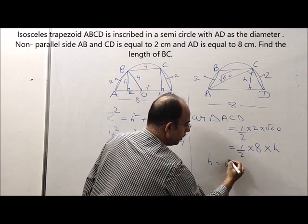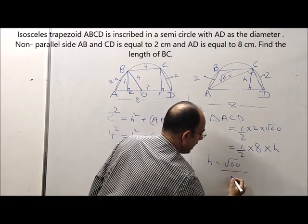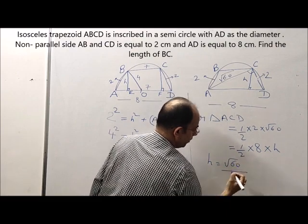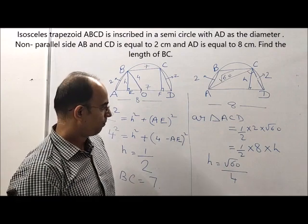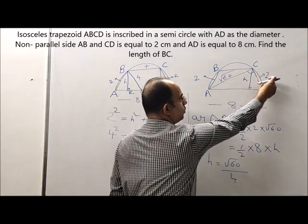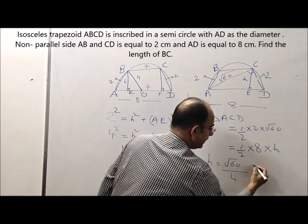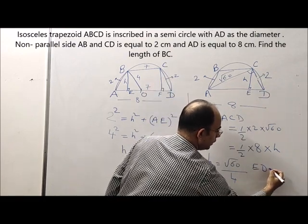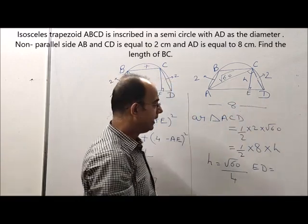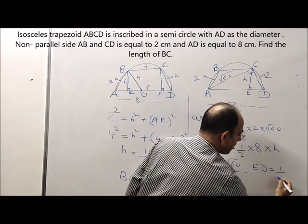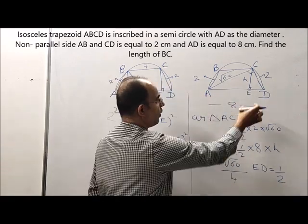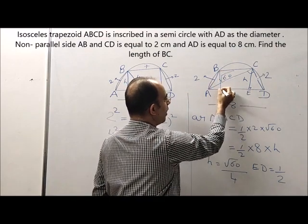Solving these two, we get H is equal to root 60 by 4. Now I got H, I know 2, therefore I can find the length of ED from here using Pythagoras. ED comes out to be 1 by 2.